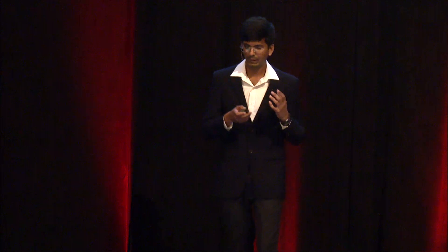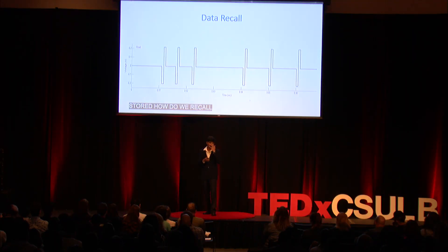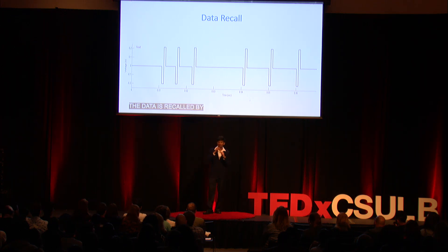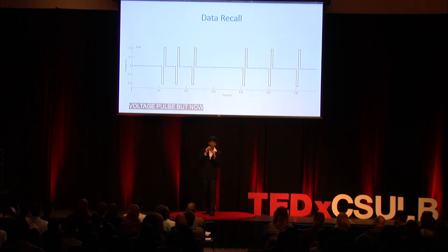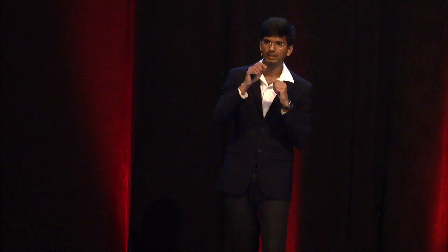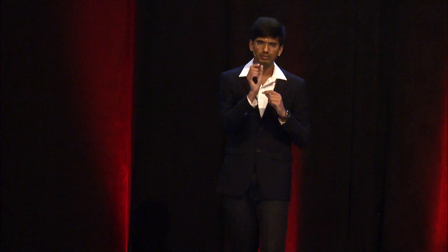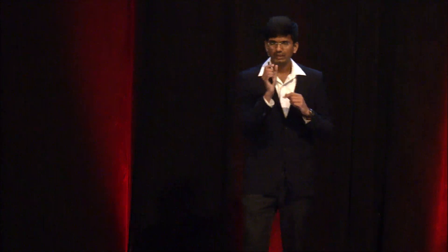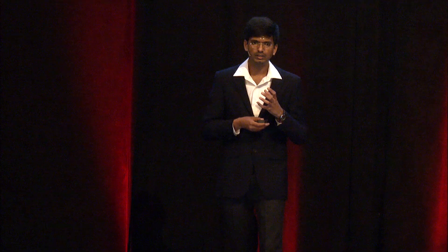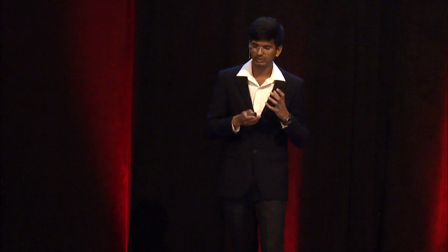Once the data is stored, how do we recall it? The data is recalled by applying a similar voltage pulse, but now the voltage applied is a little less than what was previously applied — it's in millivolts and the time interval is just for an instant. By applying this kind of voltage pulse, we can retrieve the stored data back from the Memristor.